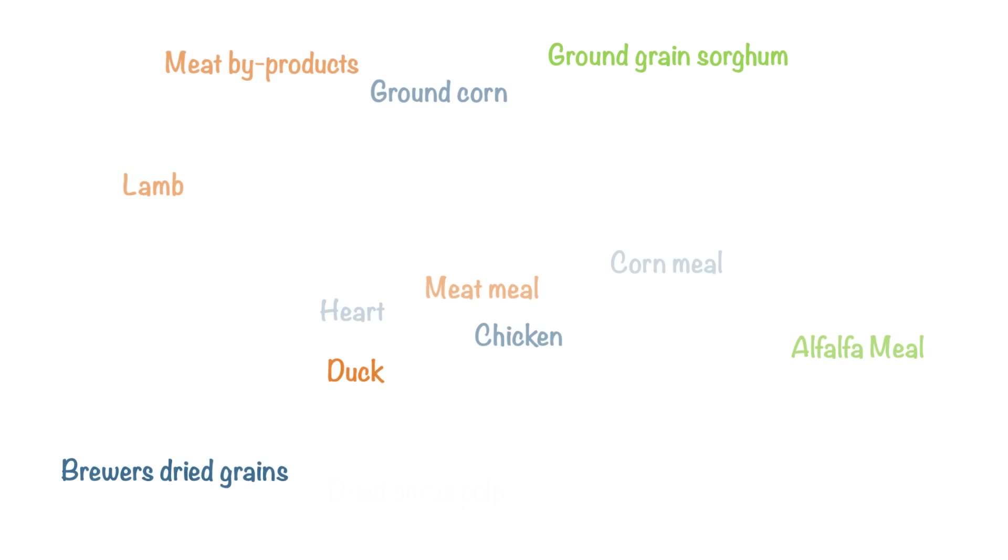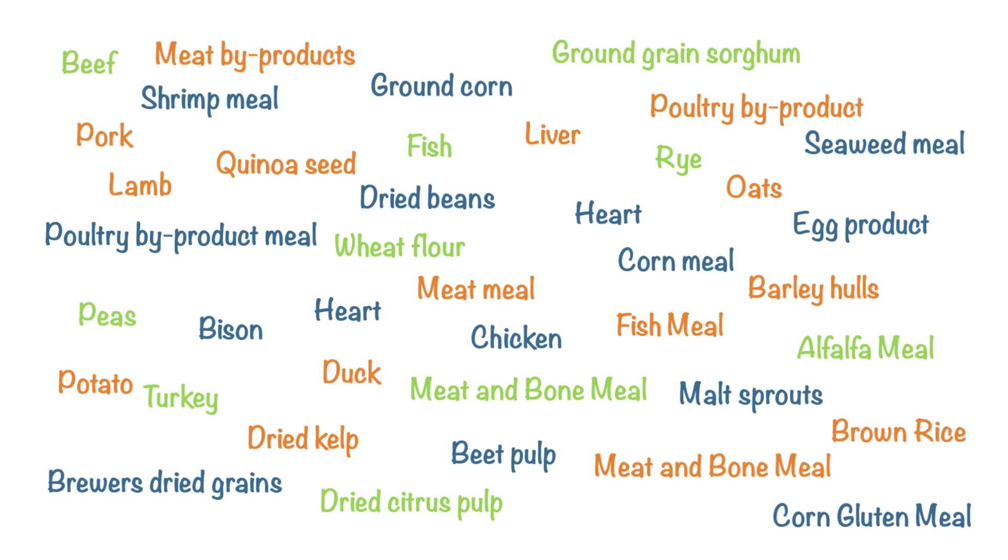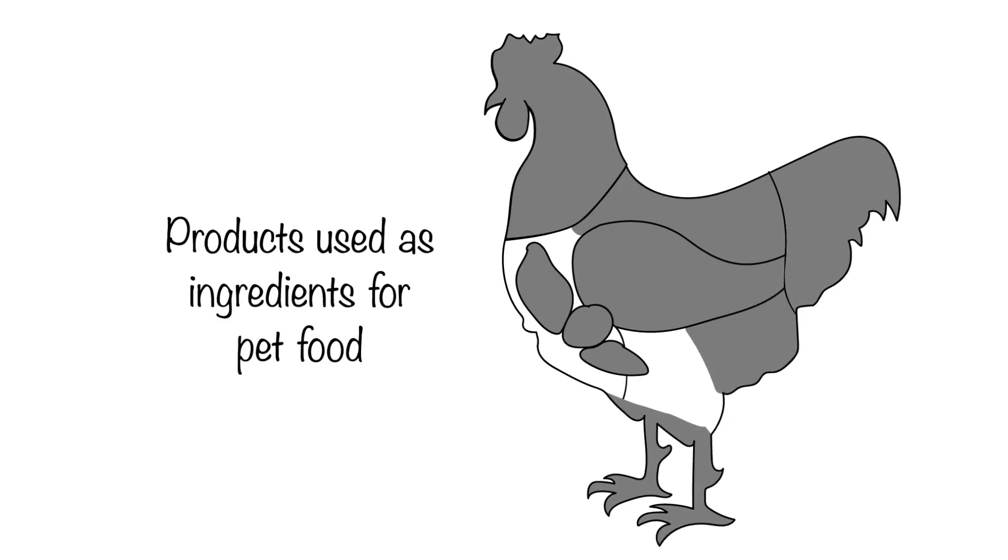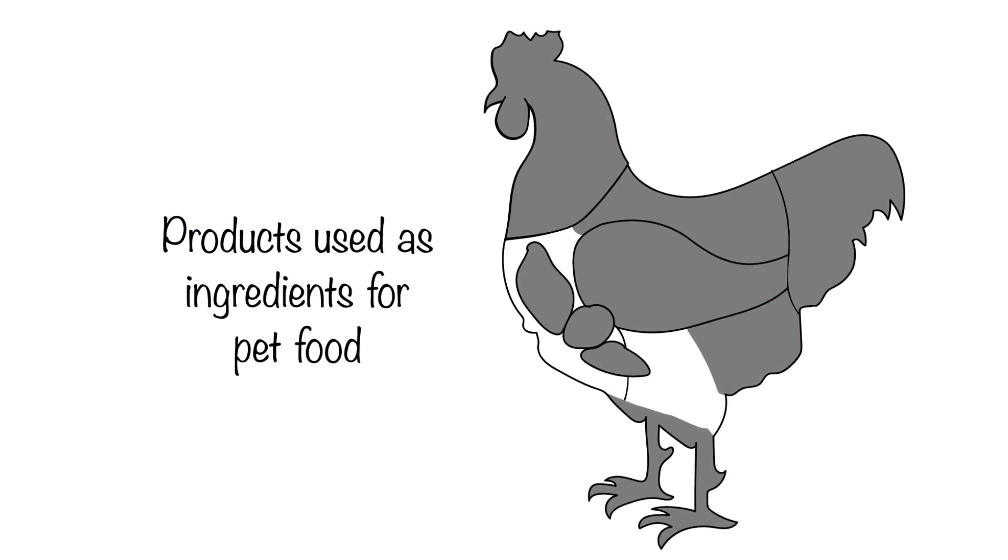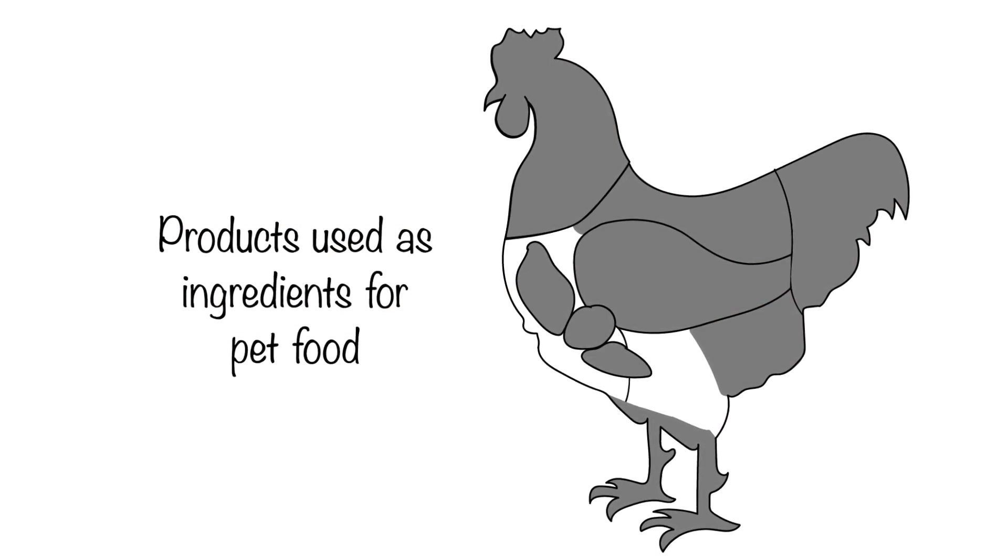That means pet food makers choose from a wide range of available animal and plant-based ingredients. Some of the animal ingredients may not seem appetizing to our tastes, but they are loaded with nutrients and pets love them.